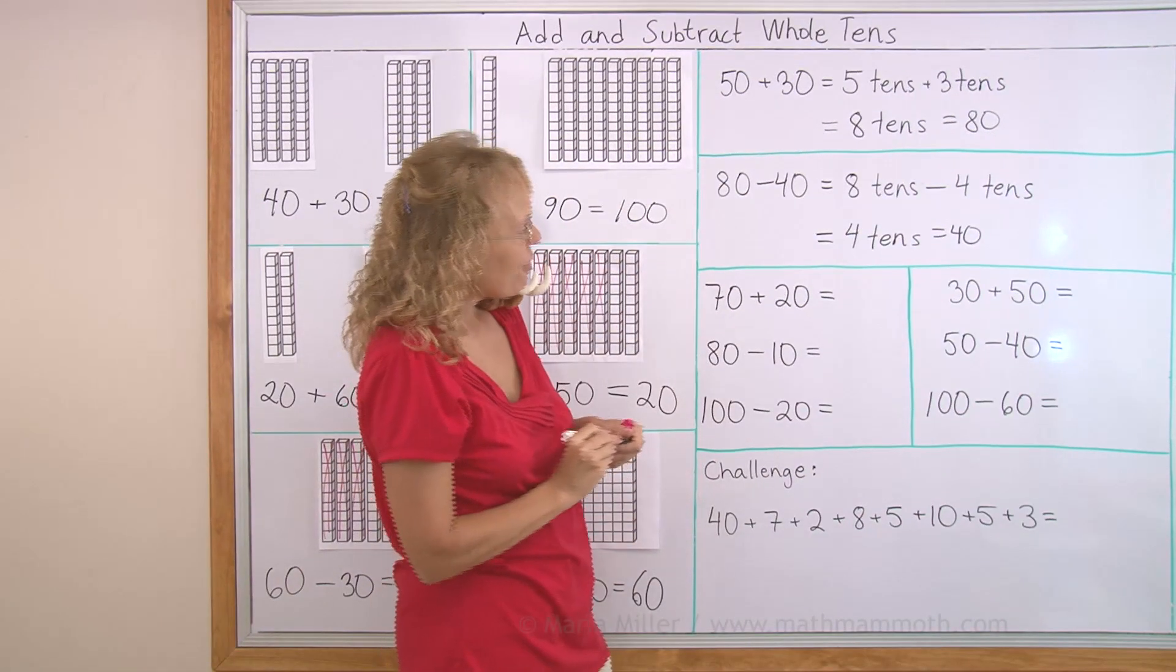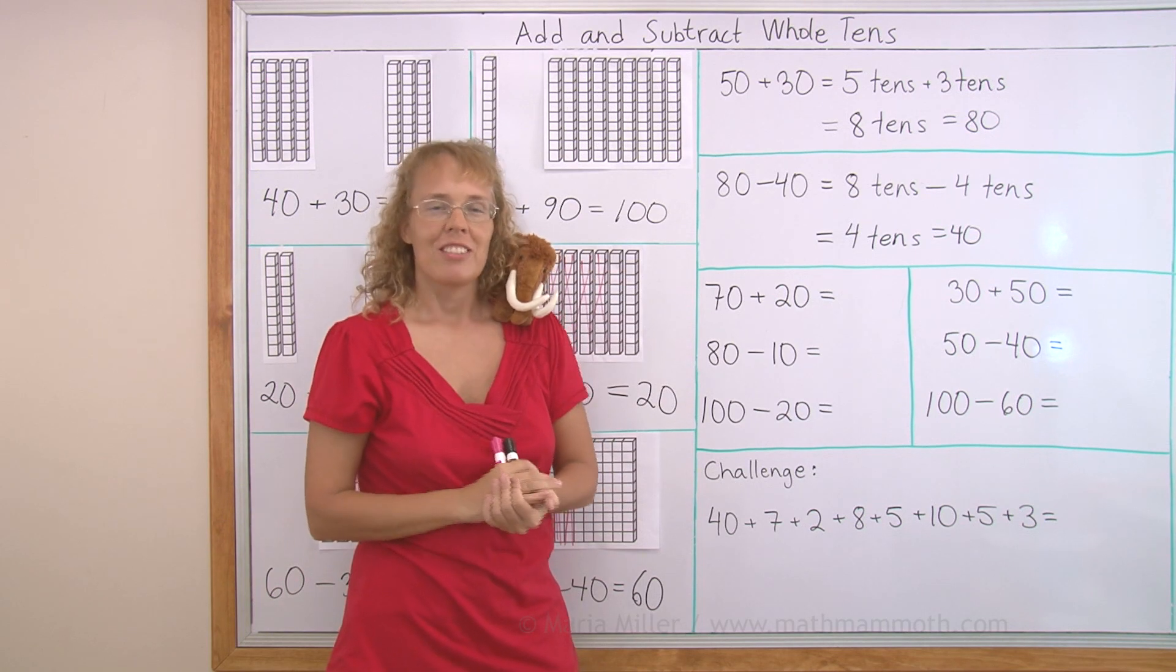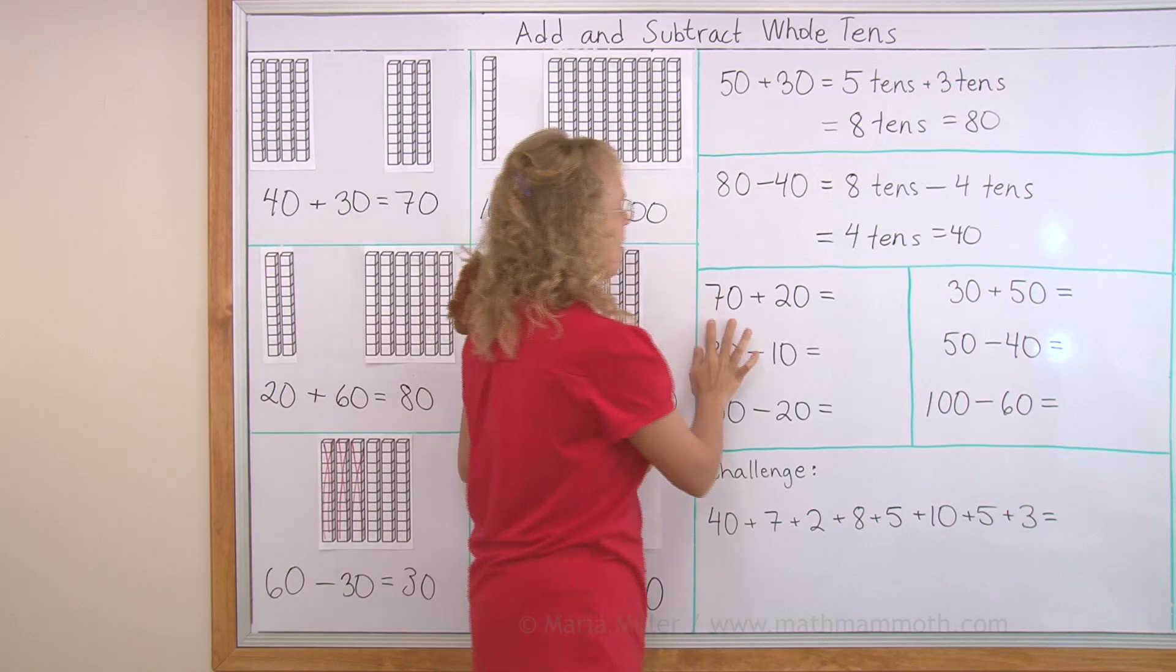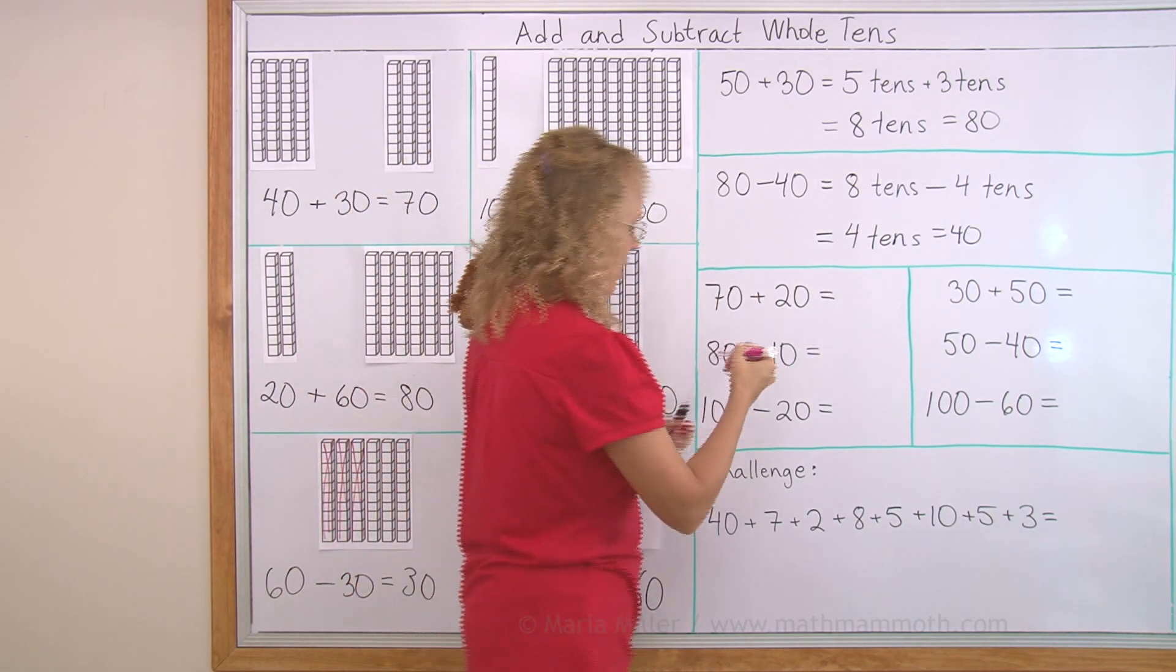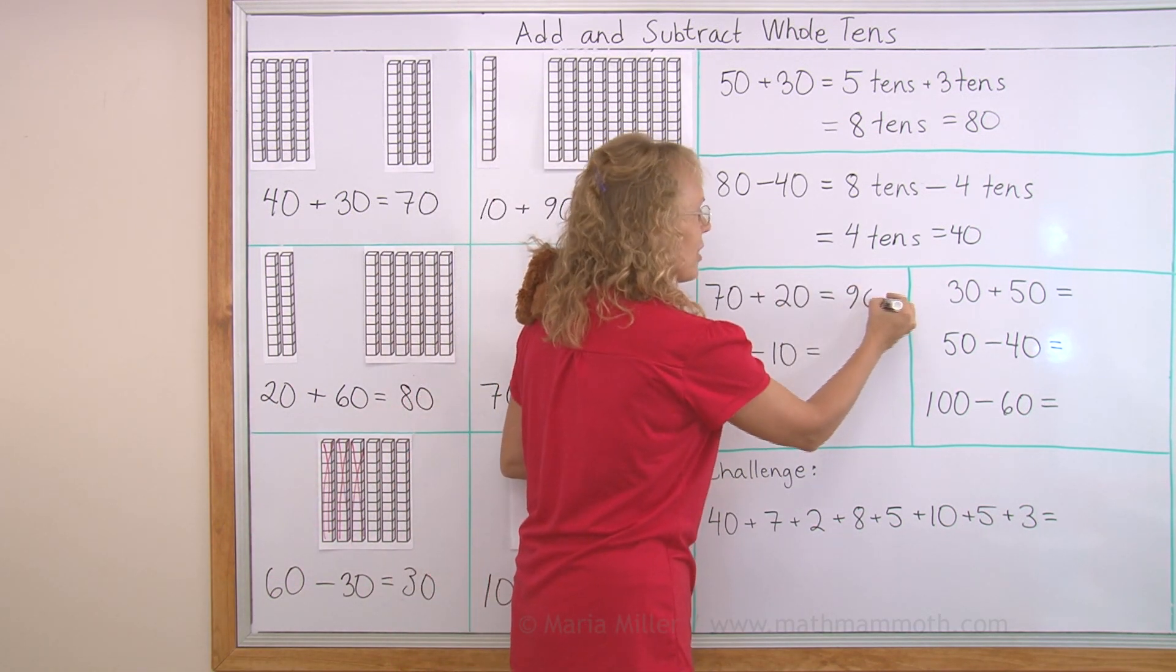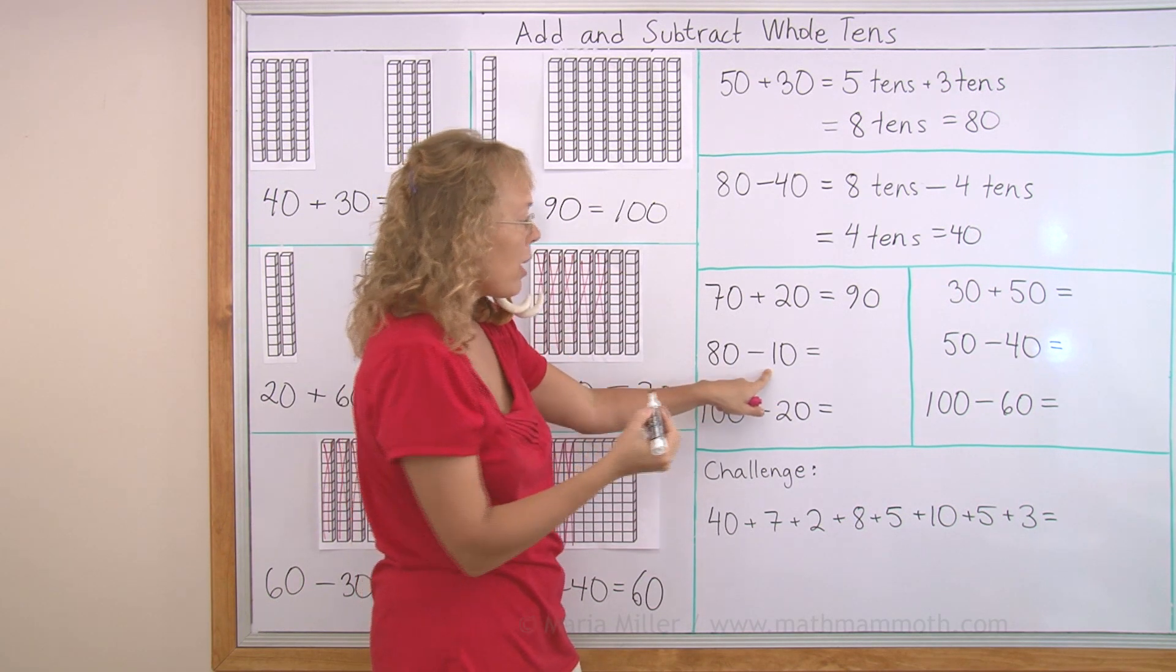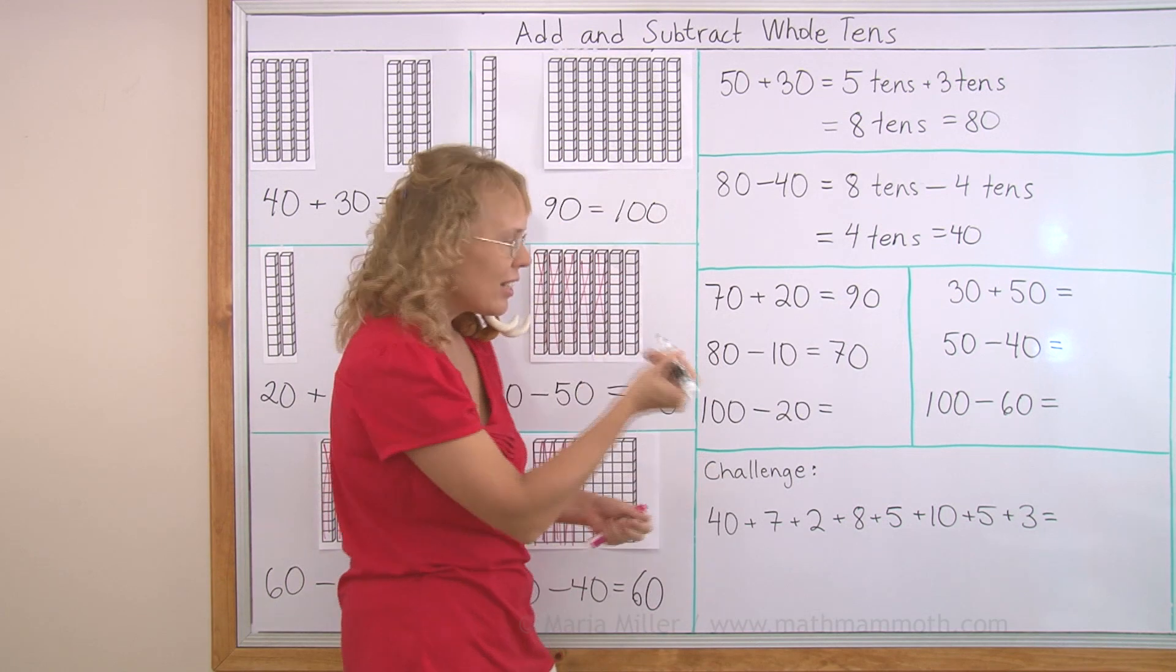Now here I have a few practice problems. Try them on your own. Pause the video and try if you can solve this. Okay. Seventy plus twenty. It's like seven plus two, which is nine. But we have nine tens. So it is ninety. Eighty minus ten. It's like eight minus one, which would be seven. But I put the zero there because we have seventy as our answer.